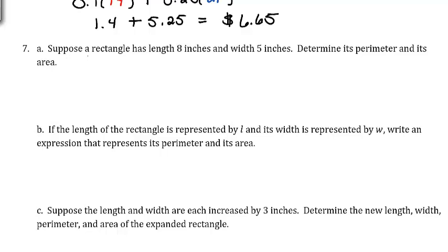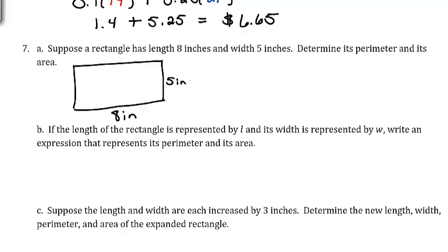Suppose a rectangle has a length of 8 inches and a width of 5 inches. Determine its perimeter and its area. The area of a rectangle is length times width, so the area would be 8 times 5, or 40 inches squared.